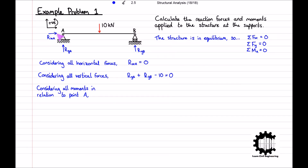As the line of action of Rxa and Rya goes through point A, the distance from those forces to point A is zero, so neither applies a moment to point A. The 10kN weight does apply a moment to point A. Since no length was given, we assign values keeping ratios correct: the 10kN weight is 1 meter from point A, and RYB is 2 meters from point A. The sum of all moments at point A equals RYB times 2 minus 10 times 1, which equals zero. The 10kN applies a clockwise (negative) moment, and RYB applies an anti-clockwise (positive) moment.